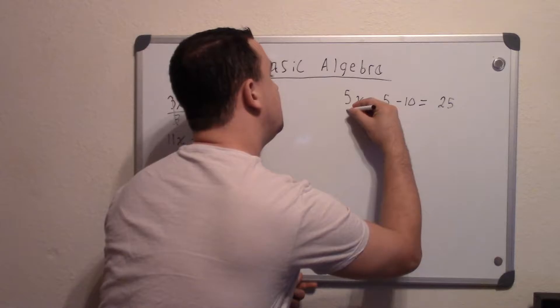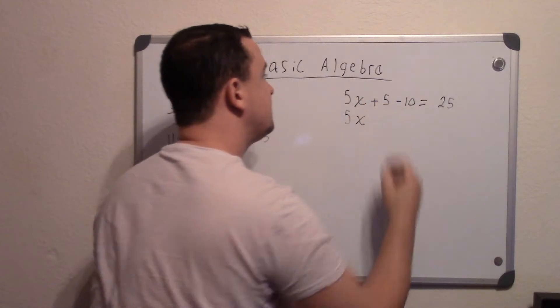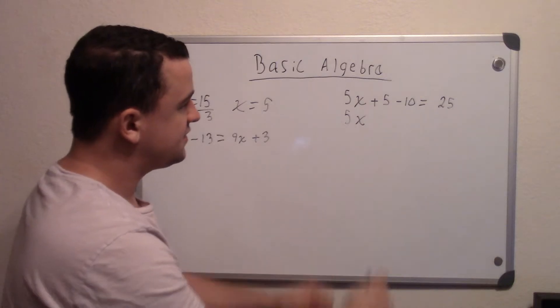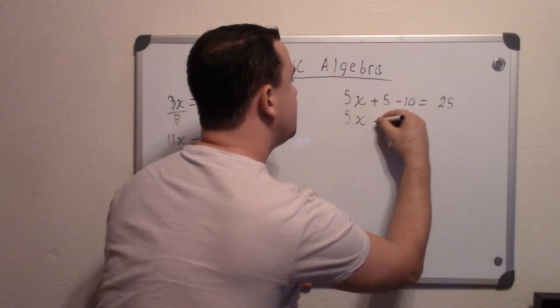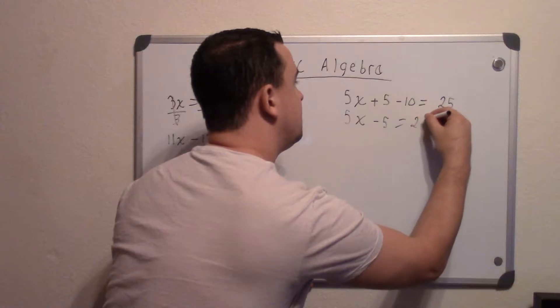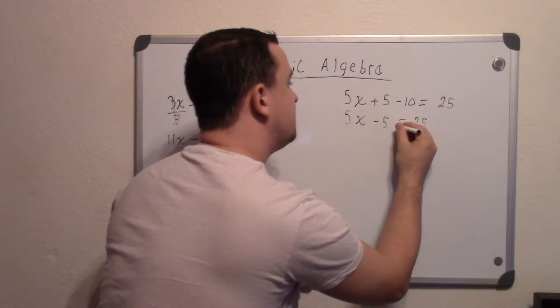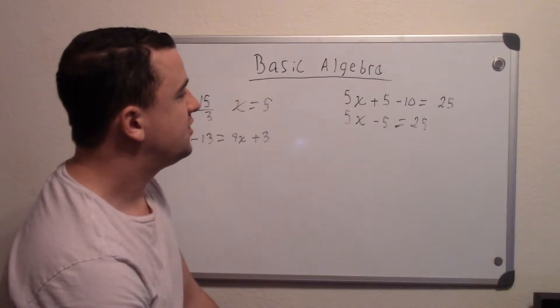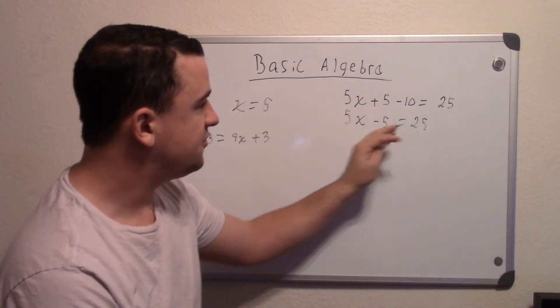Bring it down. So 5x. Now we have a negative 10 and a positive 5. You mix those, combine those together, and you get negative 5 equals 25. So now we want to get the x's on one side and the whole number's on the other. So again, whatever you do to do that, you do it to both sides.